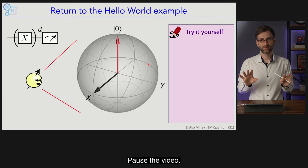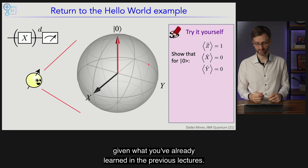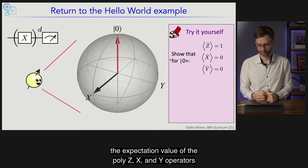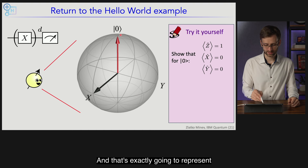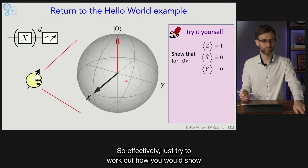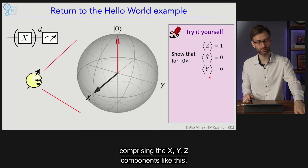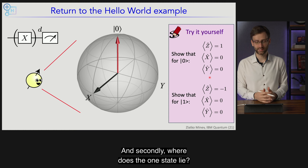Try this yourself — I'll give you two problems. First, show that for the |0⟩ state the expectation value of the Pauli Z, X, and Y operators are 1, 0, and 0 respectively. That represents this red arrow — work out how you show that the Bloch vector comprising the X, Y, Z components is (0, 0, 1). Second, where does the |1⟩ state lie? Show that for the |1⟩ state the X, Y, Z Bloch components are 0, 0, -1 respectively. Pause the video and try this yourself.